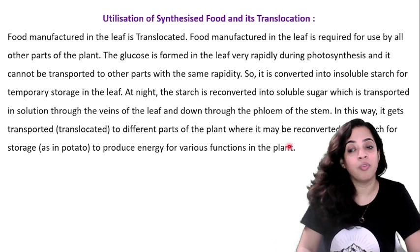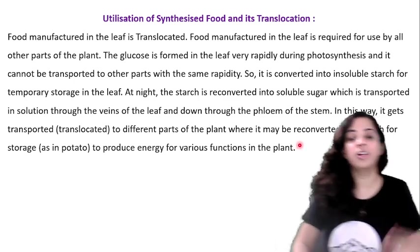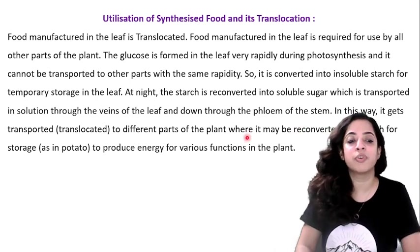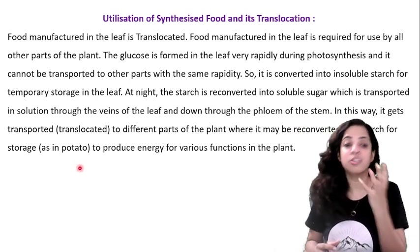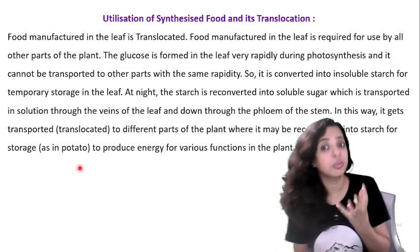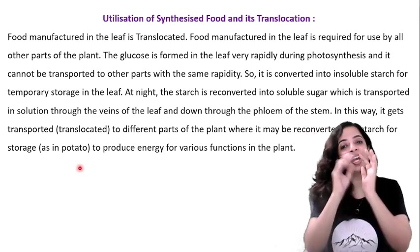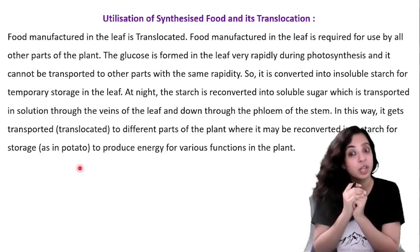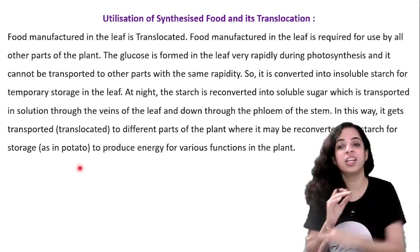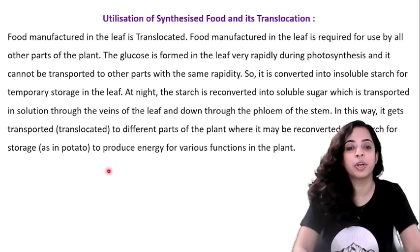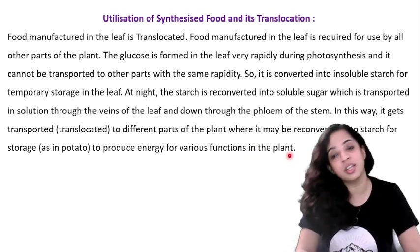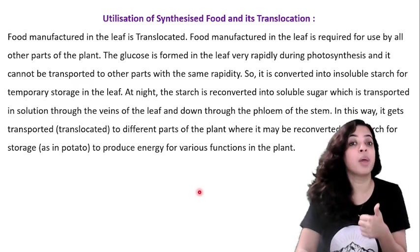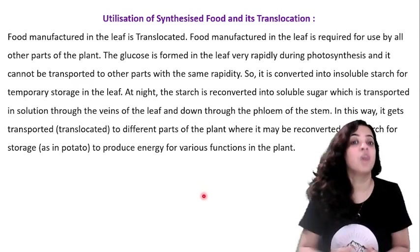Wherever the soluble sugar travels to in the plant, it can again be re-converted into starch for storage — as we see in the case of potatoes. This stored starch is then used to produce energy for various functions in the plant.